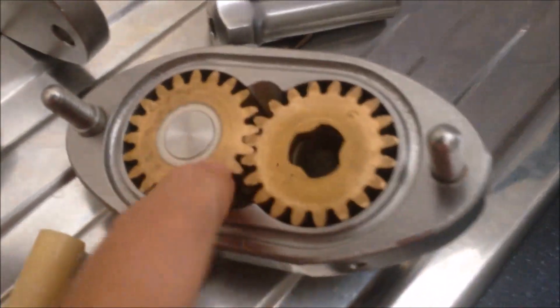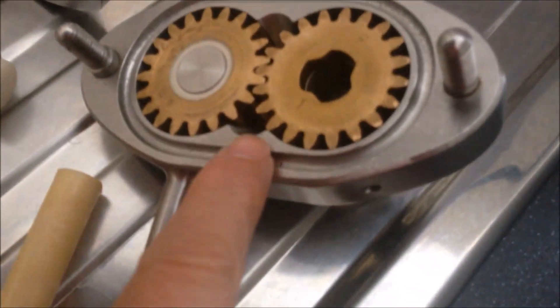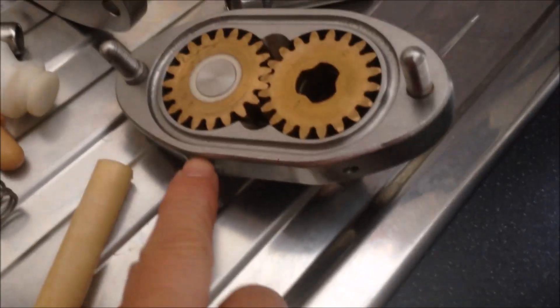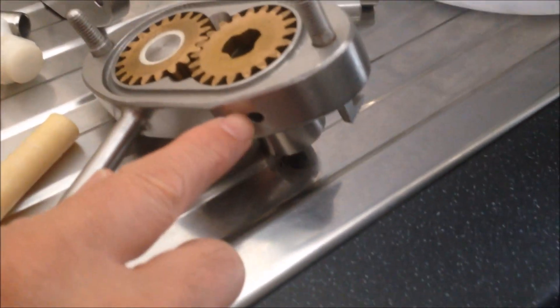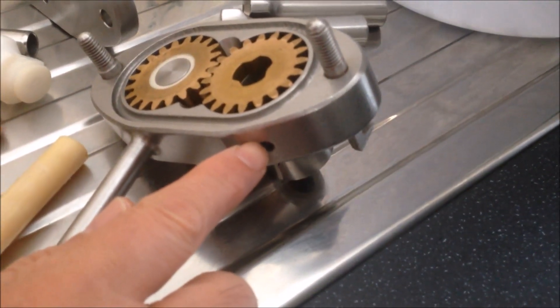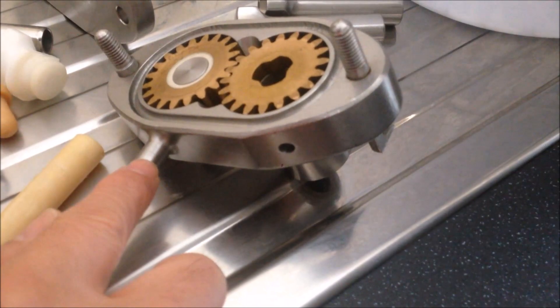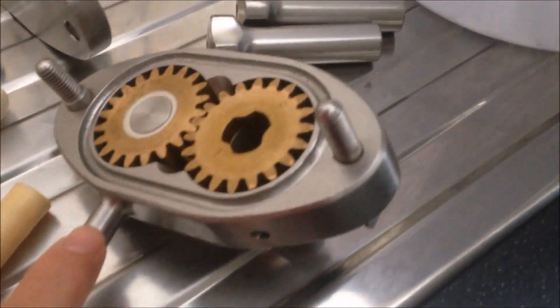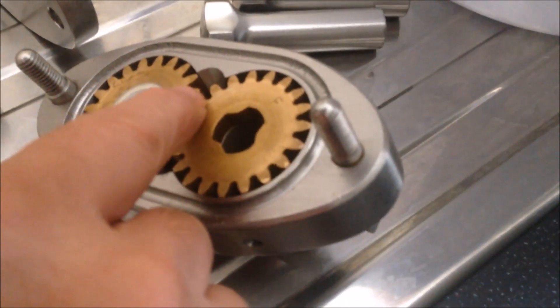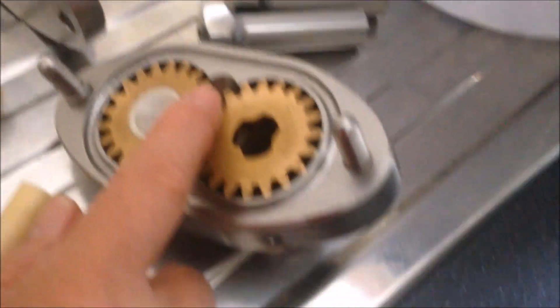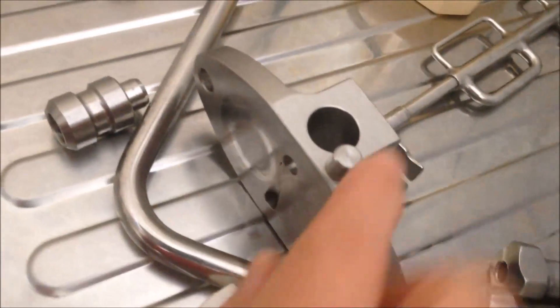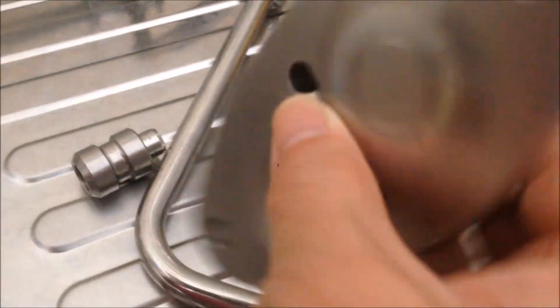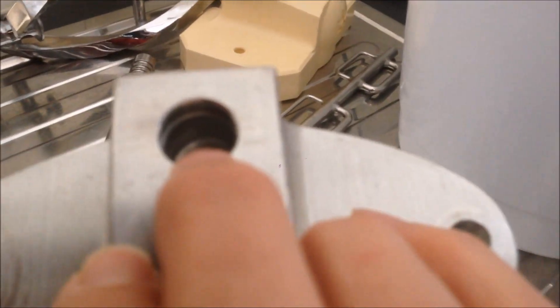When the gear is spinning, it creates vacuum here and draws the mixture from this pipe into the pump. You also see the hole here - it draws air from this side and the mixture from this side. The air and mix are mixed together, creating pressure that pushes into the front plate of the pump. The front plate on top is the outlet of the mix and air mixture.